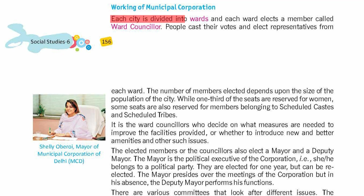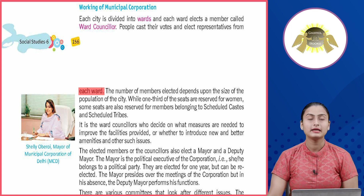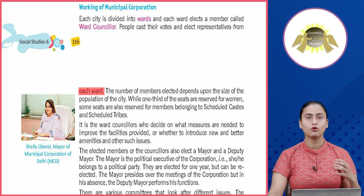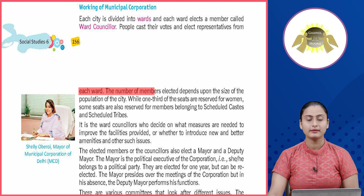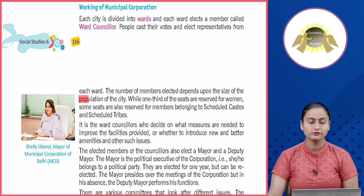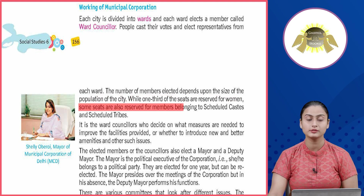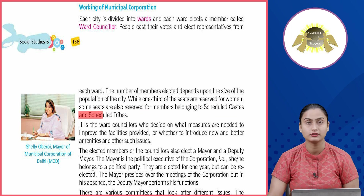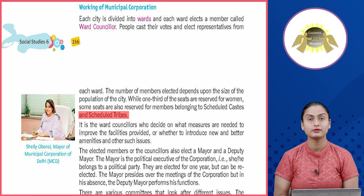Each city is divided into wards and each ward elects a member called a ward councillor. People cast their votes and elect representatives from each ward. The number of members elected depends upon the size of the population of the city. One third of the seats are reserved for women, and some seats are also reserved for members belonging to Scheduled Castes and Scheduled Tribes.